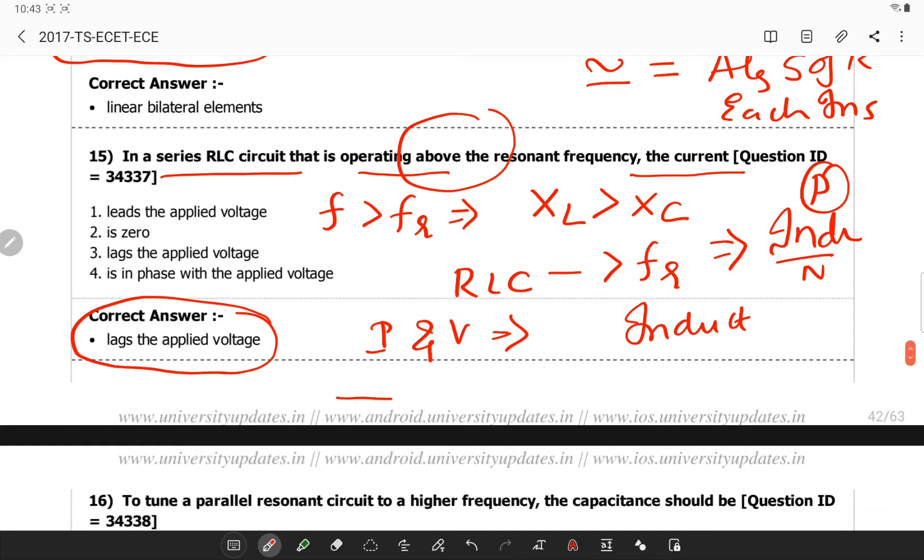If you consider the resistor, inductor and capacitor. In resistor, Vr will be in phase and in the inductor, Vl will be leading current and in this capacitor, Vc lags current. This is the position of series RLC circuit.